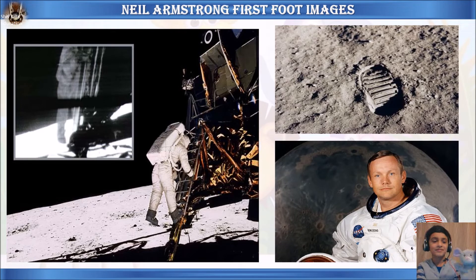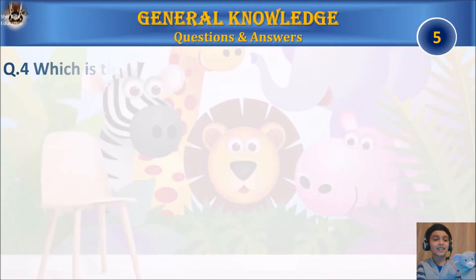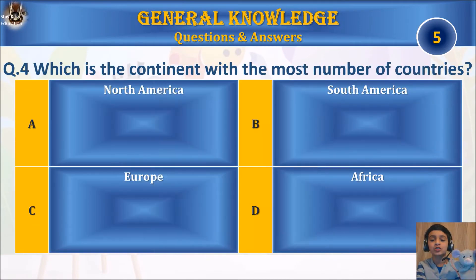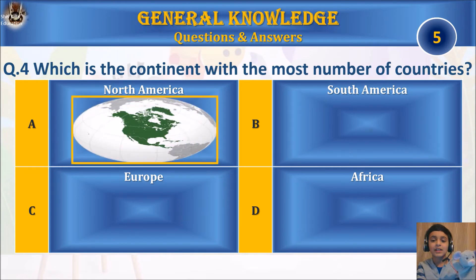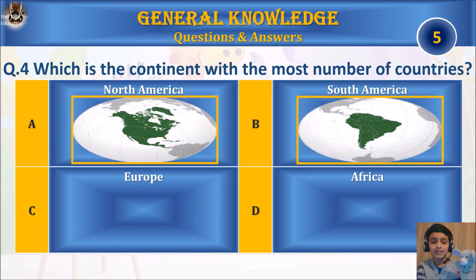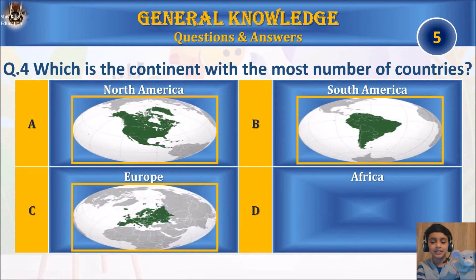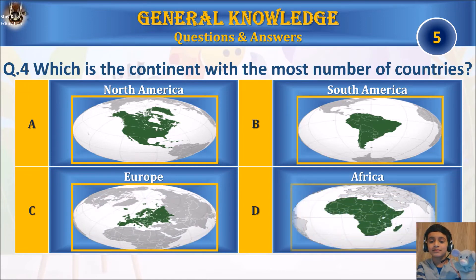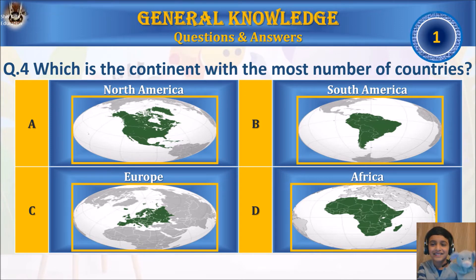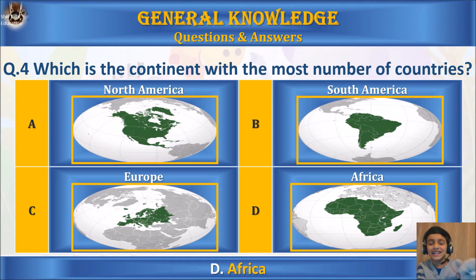Question four: which is the continent with the most number of countries? A) North America, B) South America, C) Europe, or D) Africa? Your time starts. You said North America — wrong! The answer is Africa, but you're kind of right that North America does look bigger than Africa.